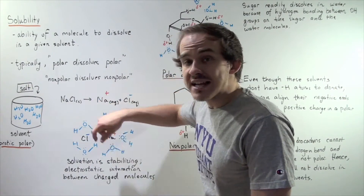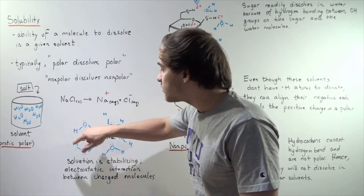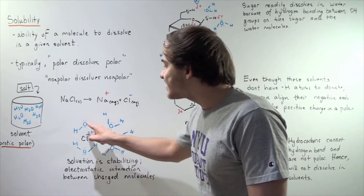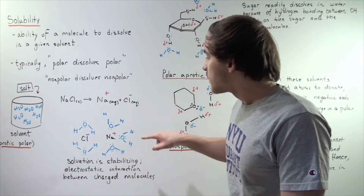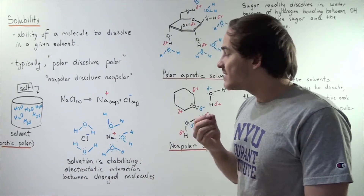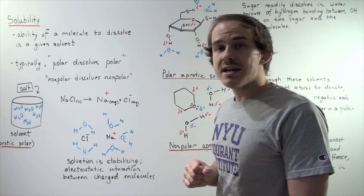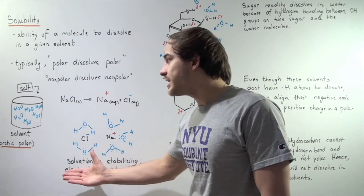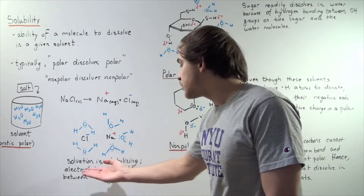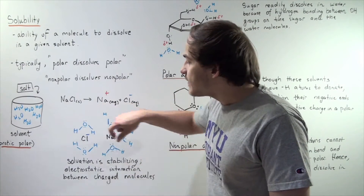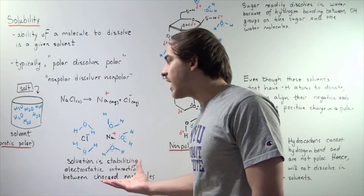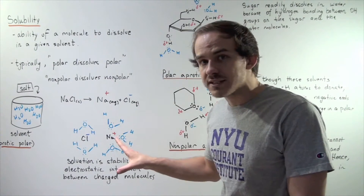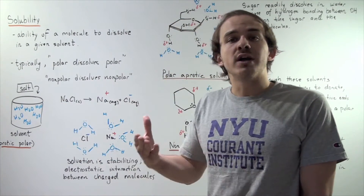Recall that the oxygen has a partial negative charge and the H atoms have a partial positive charge. The water molecules will align in a way to stabilize the negative charge on the chloride. Likewise, the water molecules will align to stabilize the positive charge on our sodium atom. So solvation takes place, and solvation is stabilizing — it is the electrostatic interaction between the negative charges and the positive charges. Because of this stabilizing effect, because our products are stabilized by the polar solvent, sodium chloride readily dissociates.